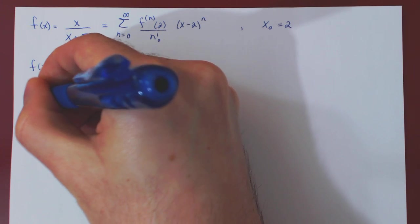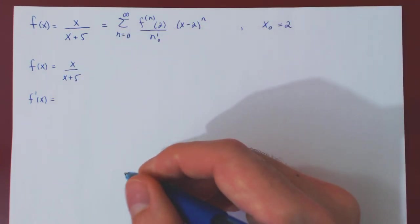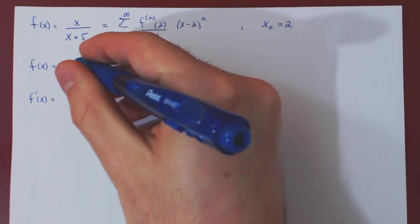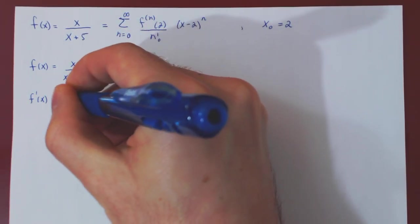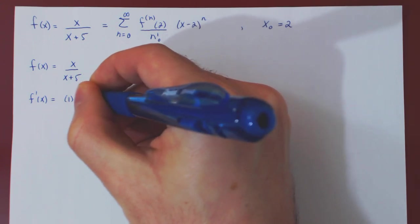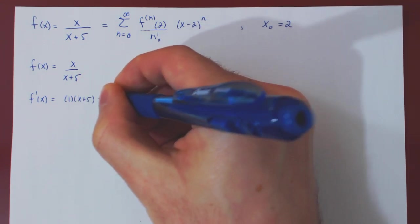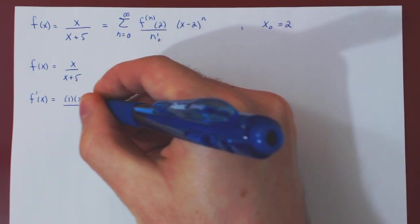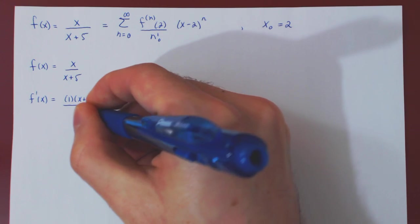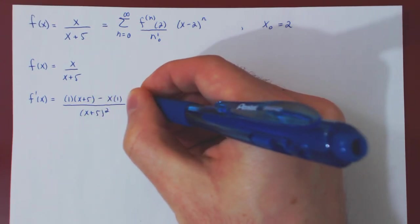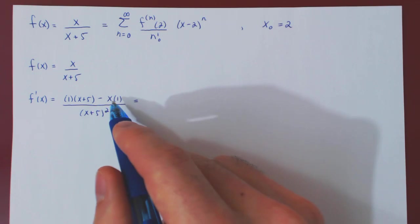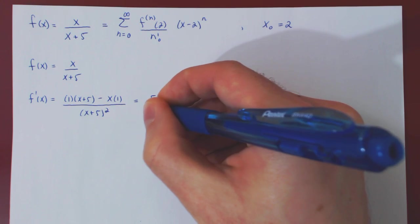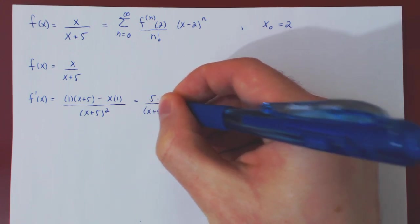f prime of x: we have a quotient, so we use the quotient rule. We get the derivative of x, which is 1, times x plus 5, minus x times the derivative of x plus 5, which is 1. So it's just minus x, over x plus 5 squared. Let's simplify on top: we have x plus 5 minus x, so we're left with 5 over x plus 5 squared.